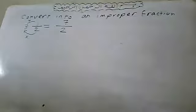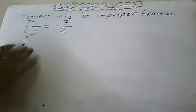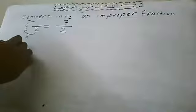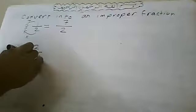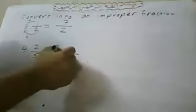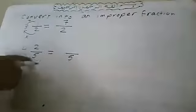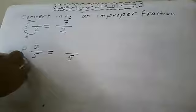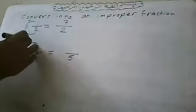Another example: four and two over five. Write five below. Five times four equals twenty. Twenty plus two equals twenty-two. So the answer is twenty-two over five.